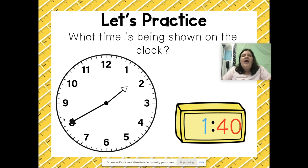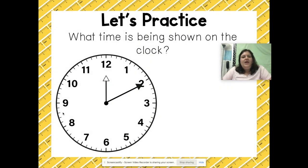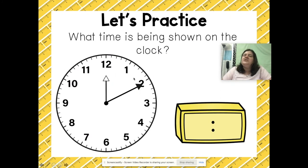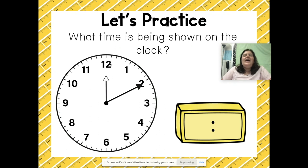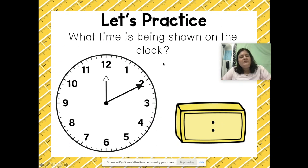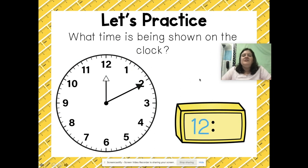Let's practice one more time. My hour hand is pointed directly at the 12, so that means it's about 12 o'clock. My minute hand is pointed to the 2 — when I skip count by fives two times it's going to be 5, 10. So the time shown on this clock is 12:10.